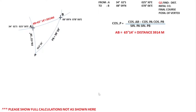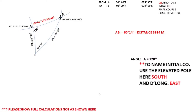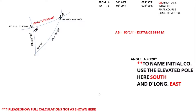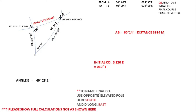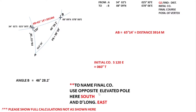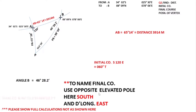I am not showing full calculations here. For the initial course, I got the angle as 120 degrees. The course is named with the elevated pole used, which is south, and D-long is east, so the initial course is South 120° East, which is 60 degrees. For angle B, I calculated and got 46 degrees for the final course. Opposite to the elevated pole, that is north, and D-long east — so your final course is 46 degrees north east.